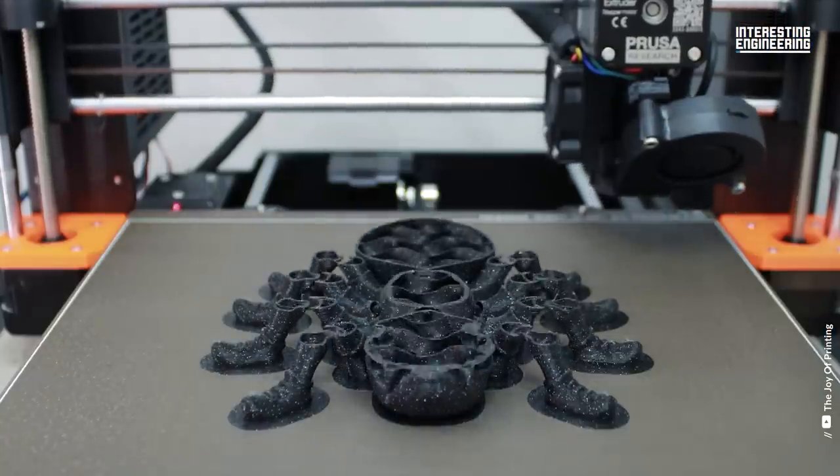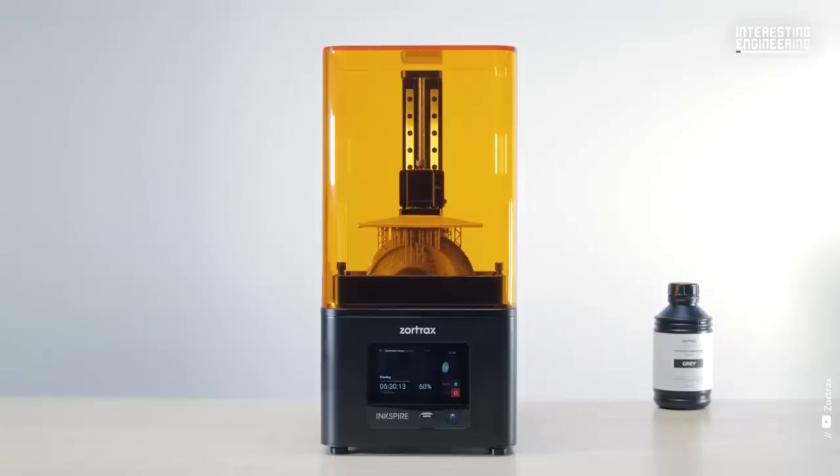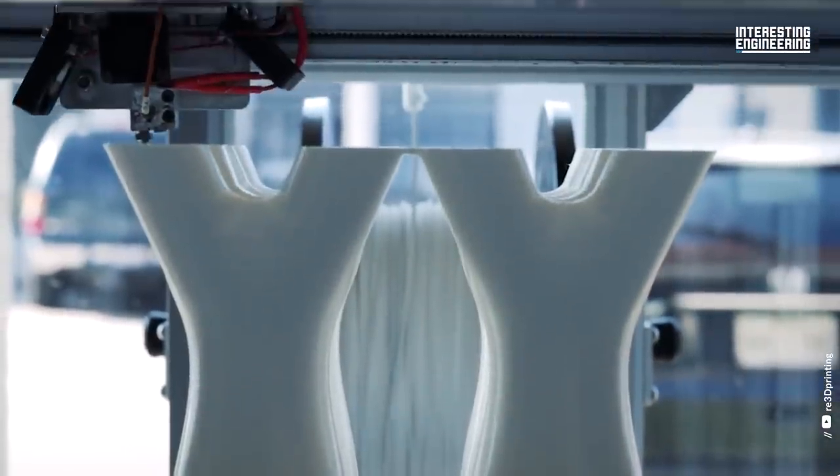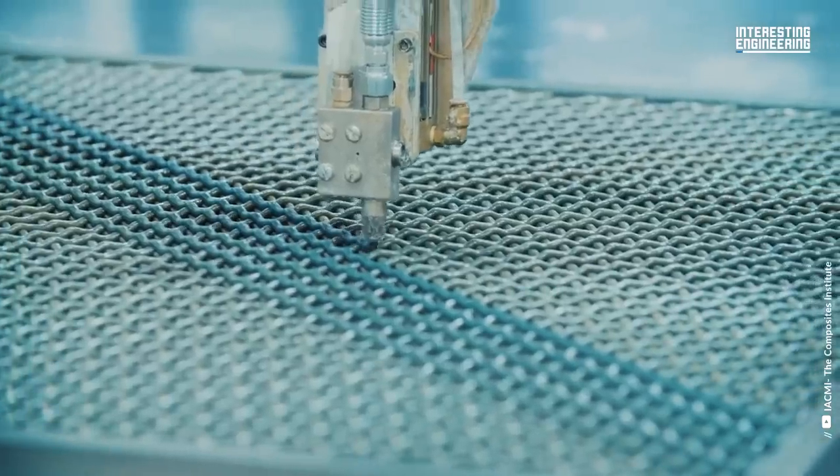Of course when we think of 3D printing we automatically think of plastic. There are two main types of plastics: thermoplastics and thermosetting plastics.